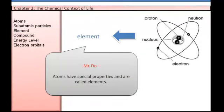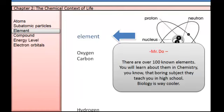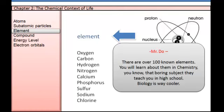Atoms with special properties are called elements. There are over 100 known elements. You will learn about them in chemistry, that boring subject they teach you in high school. Biology is way cooler.